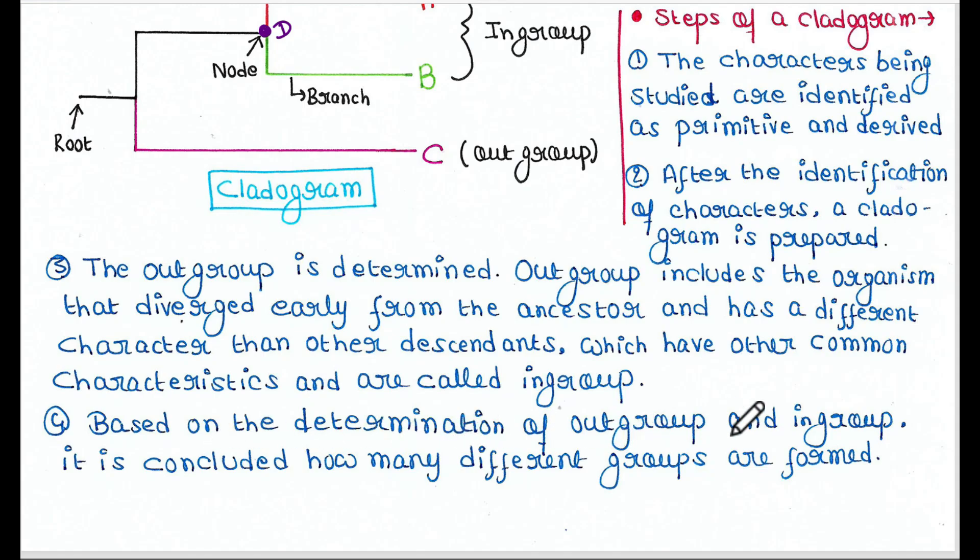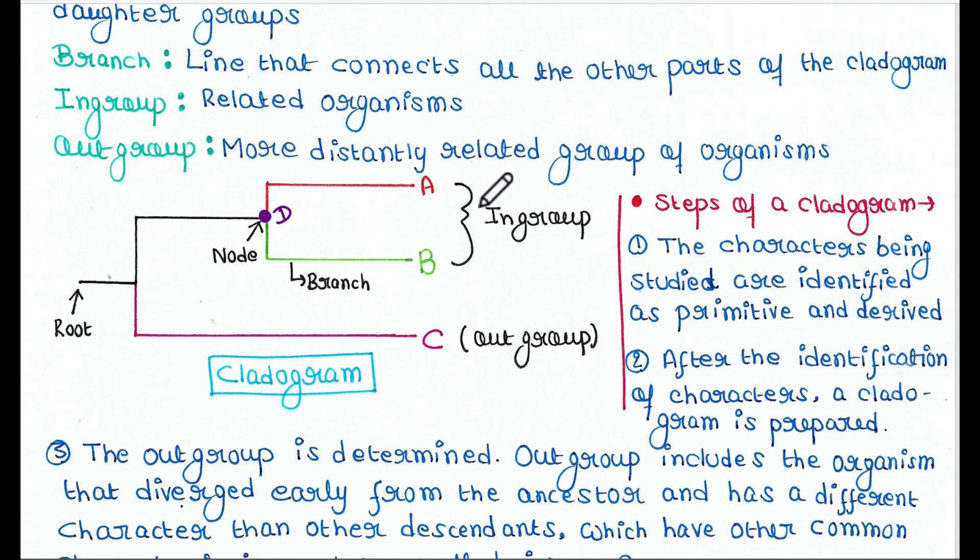Based on the determination of out-group and in-group, it is concluded how many different groups are formed. So here we have three groups A, B and C. A and B are in-group and C is out-group.